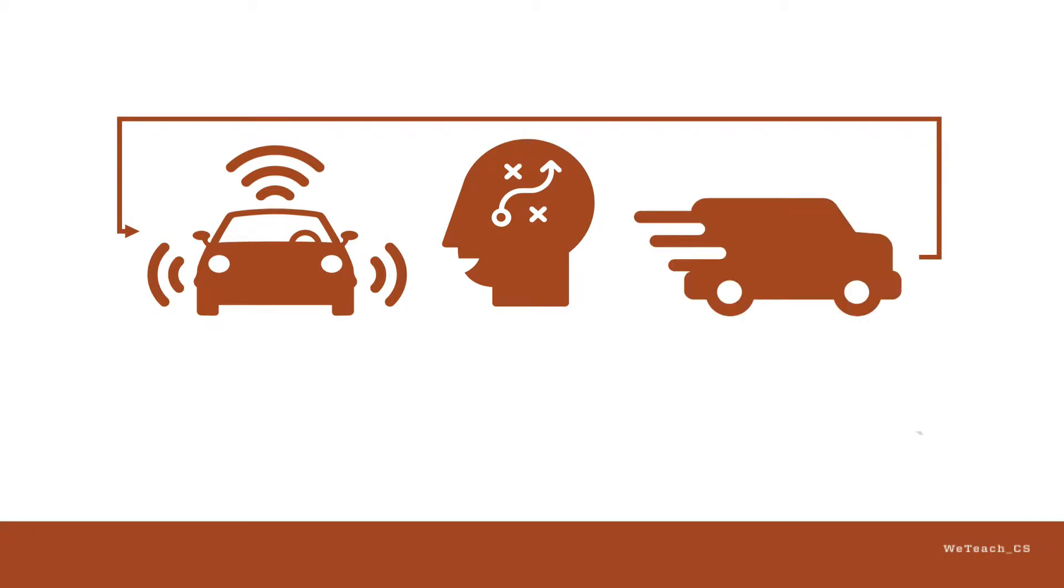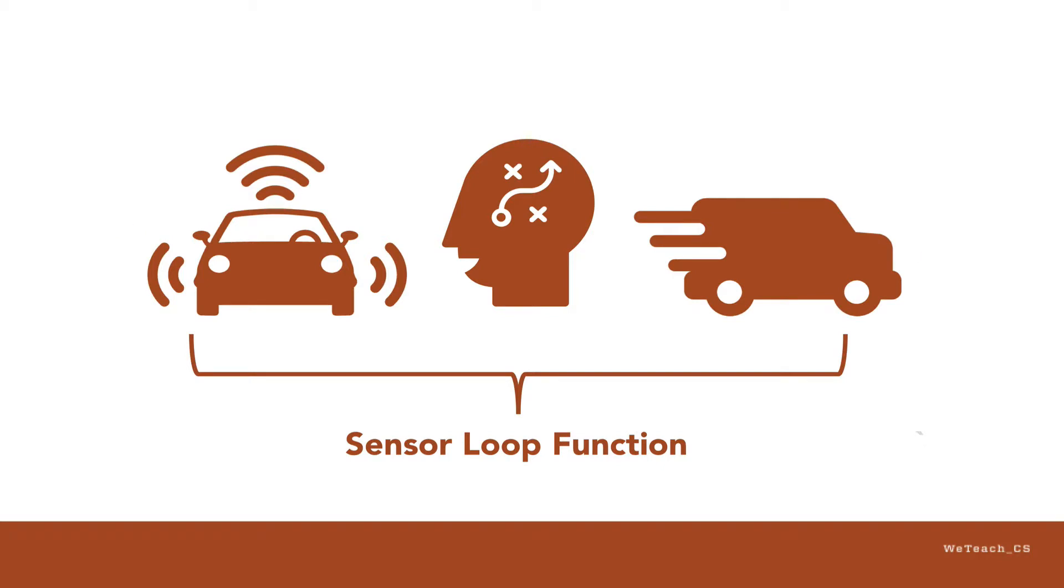Many frameworks, such as Arduino, use a main sensor loop function. The robot firmware will automatically repeat this function, so you don't need to explicitly write a loop.